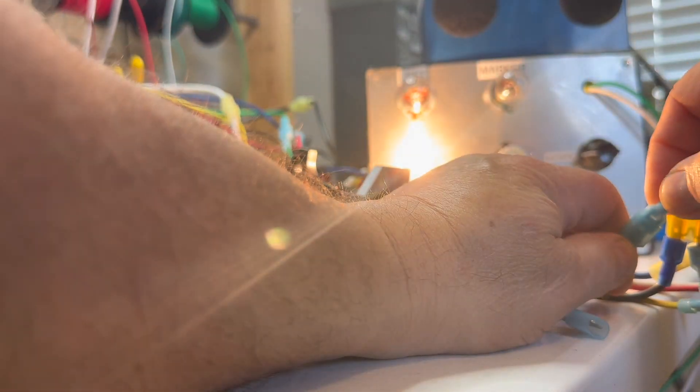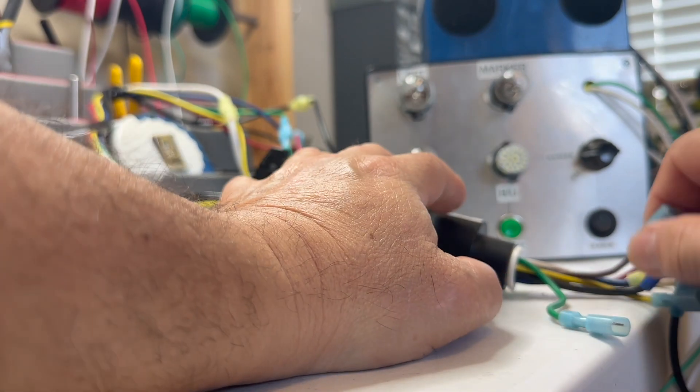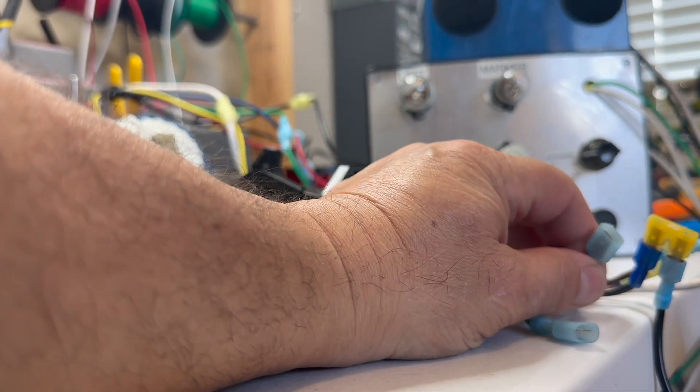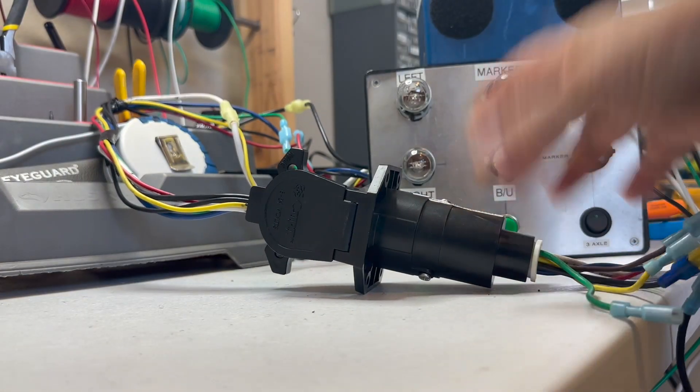Then you can just go through and test each one of those. Don't hook to the white one; that'll be a direct short. And if you have backups on there, you can test your backups too.